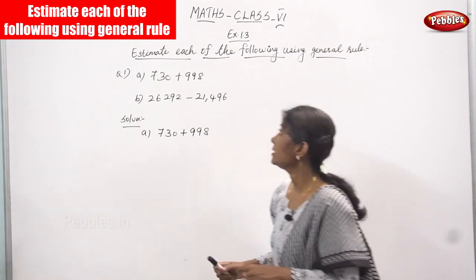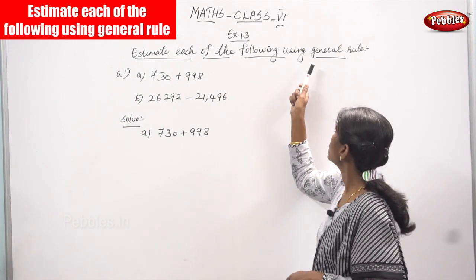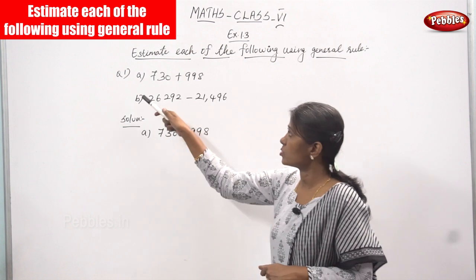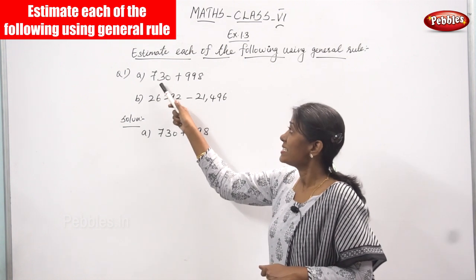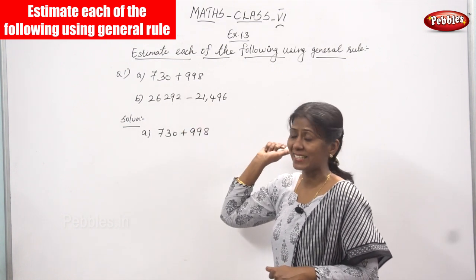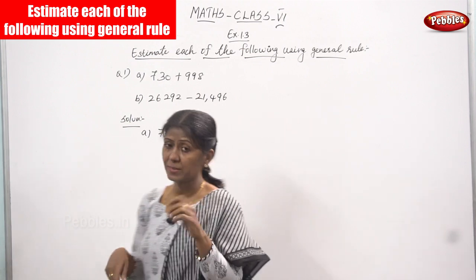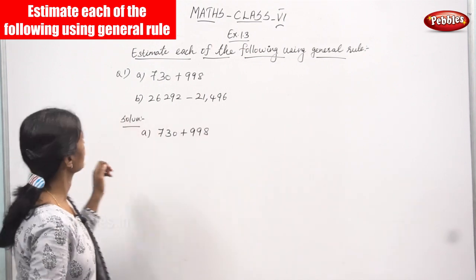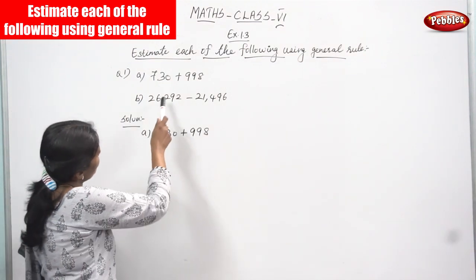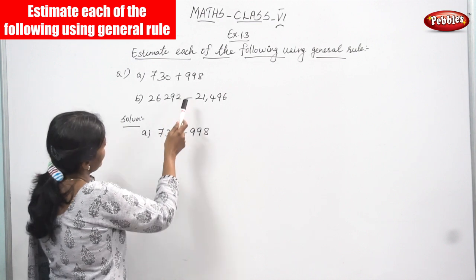Now we are going to estimate each of the following using the general rule. Look at question 1A: 730 plus 998. We are going to solve the problem. Let's start the class. First one: 730 plus 998.